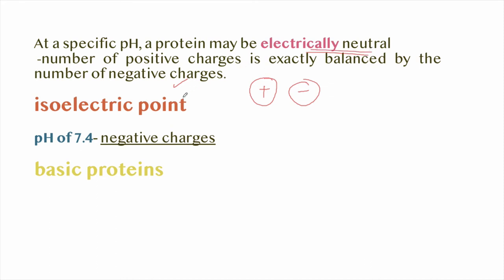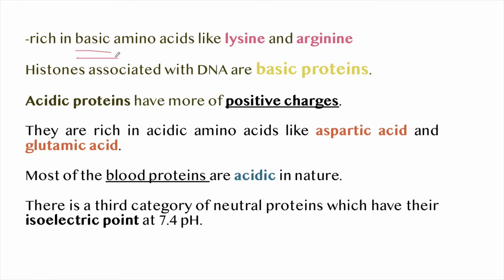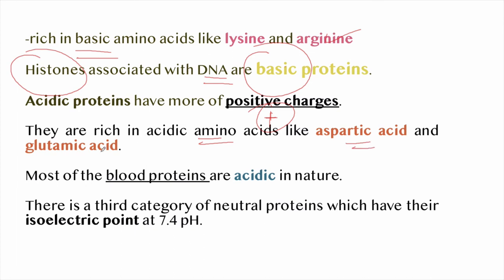This specific pH is known as the isoelectric point. At physiological pH of 7.4, a protein may have more negative charges — such proteins are called basic proteins and they are rich in basic amino acids like lysine and arginine. Histones, which are associated with DNA, are also basic proteins. Acidic proteins have more positive charges and are rich in acidic amino acids like aspartic acid and glutamic acid. Most blood proteins are acidic in nature.